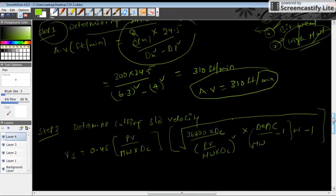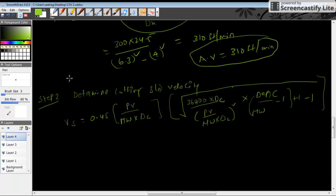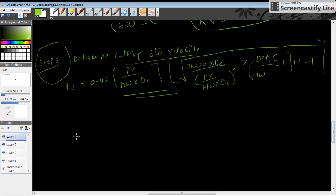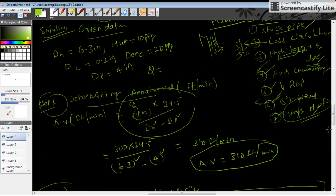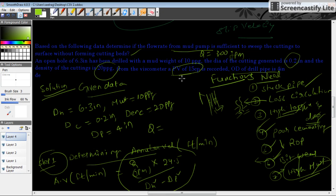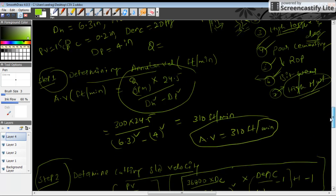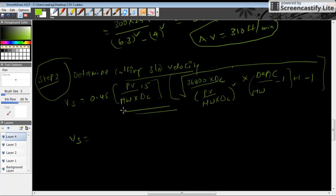The second step in determining is cutting slip velocity. We have this formula which we discussed in session 2. So incorporating the same, VS equals 0.45... PV, that is plastic viscosity from the given data is 15 cp. Mud weight is 10 ppg, diameter of cuttings is 0.2 inch, and density of cutting is 20 ppg. Substituting the above data in this formula, we get VS is equal to around 36 feet per minute.